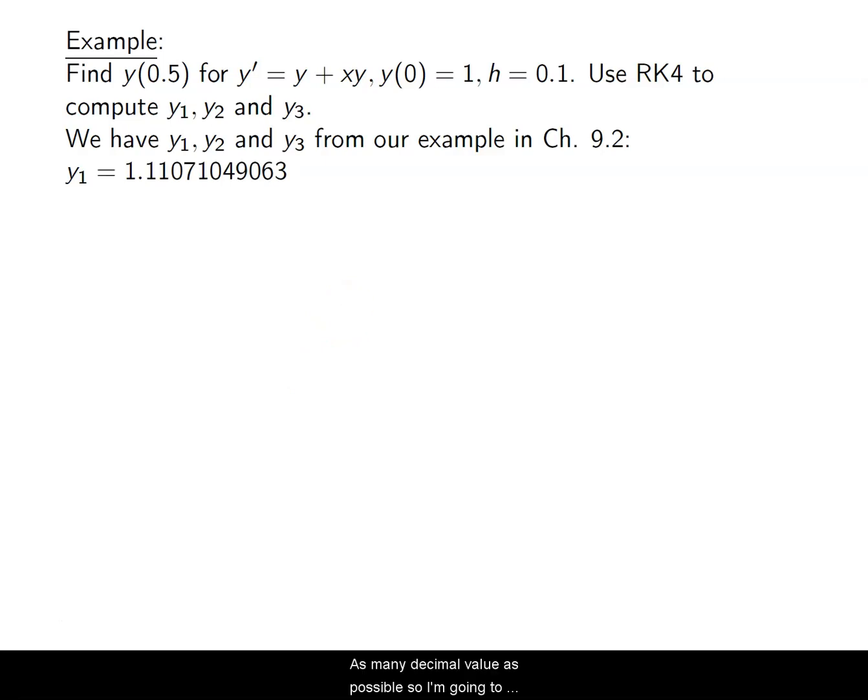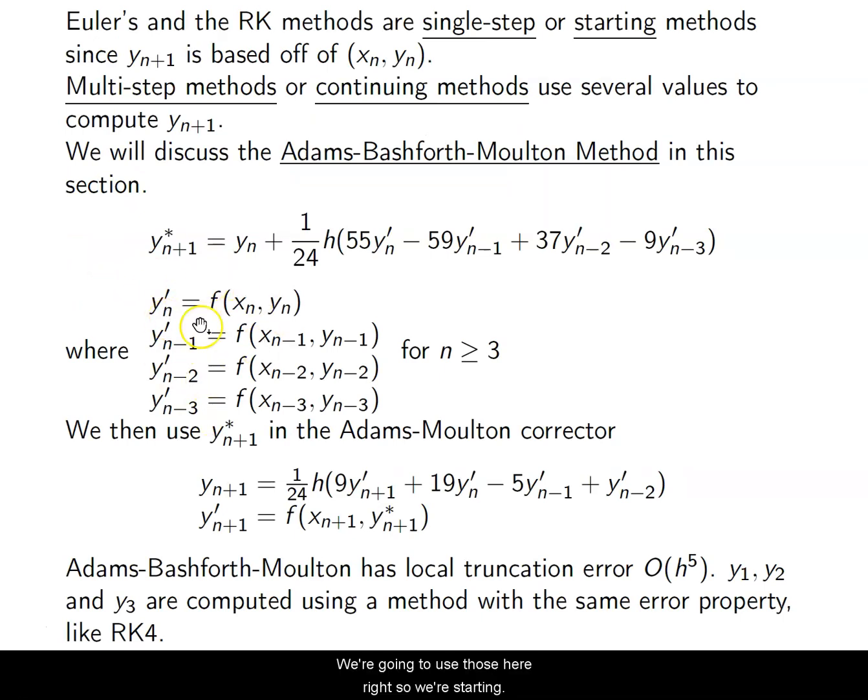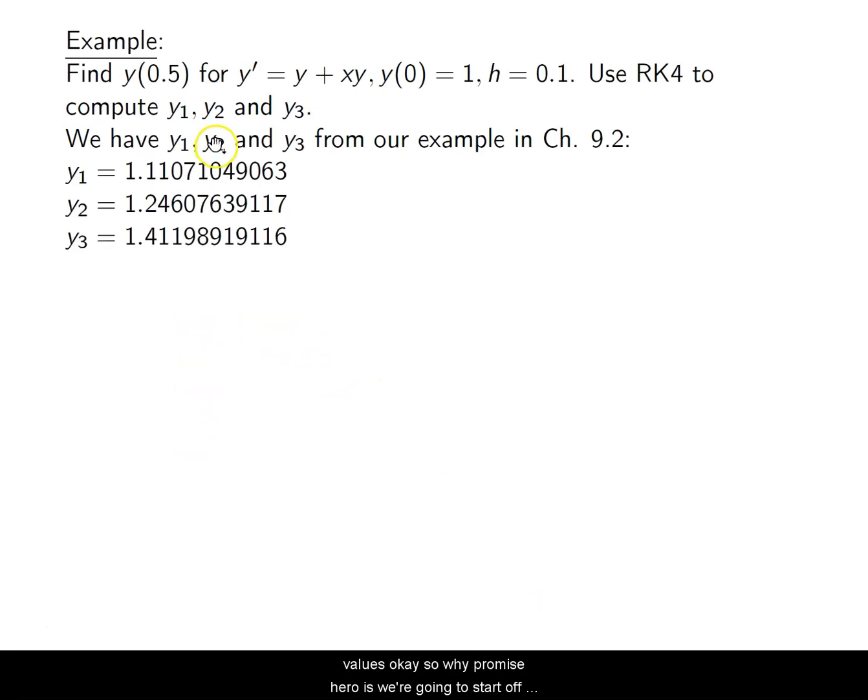But luckily, we've already covered RK4 in our previous chapter, so we have those values for this step size with this DE already. So stealing our values from the previous section, we're going to use as many decimal values as possible. So I'm going to actually show them to you guys this time. So our Y1, we should have this value calculated for our h equals 0.1, this for our Y2, and this for Y3.